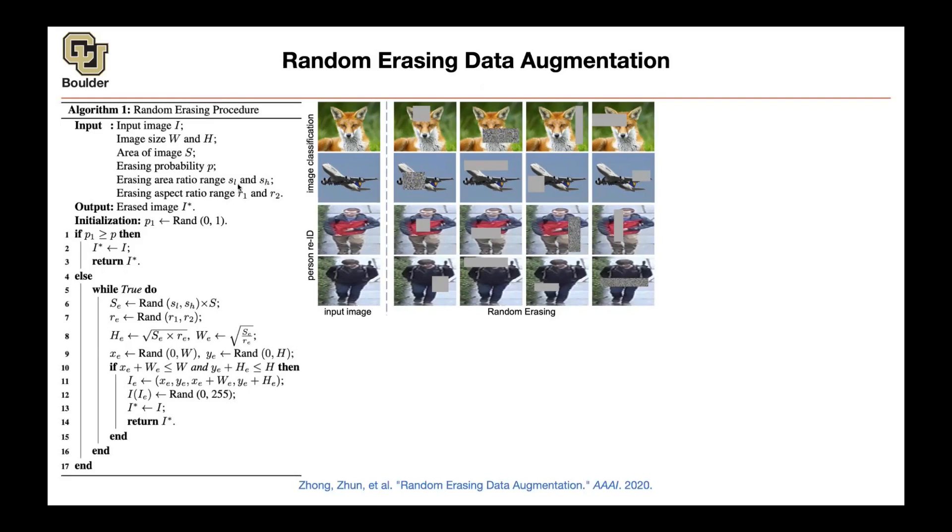The area, the size of these boxes that you want to erase, you set a minimum value and maximum value. These are also hyperparameters. The aspect ratio—should it be long along the h axis or shorter along the y axis? These give you your aspect ratios. That one also has a minimum value, maximum value. These are hyperparameters you choose. You generate a random number, and if that random number is bigger than p, you don't do anything, you just return your image.